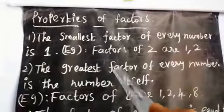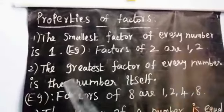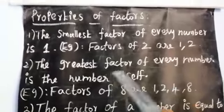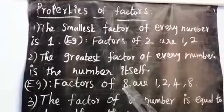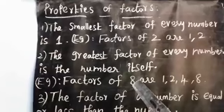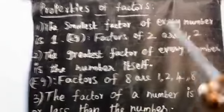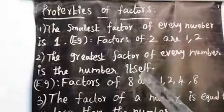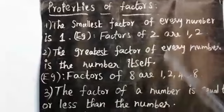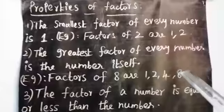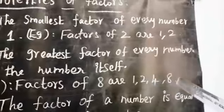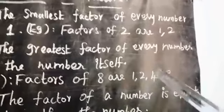Second property: the greatest factor of every number is the number itself. Example — factors of 8: checking 1 times table gives 1, 2 times table gives 2, 4 times table: 2 fours are 8. 5, 6, 7 do not divide 8 exactly. 8 divides itself. So the factors of 8 are 1, 2, 4, and 8.